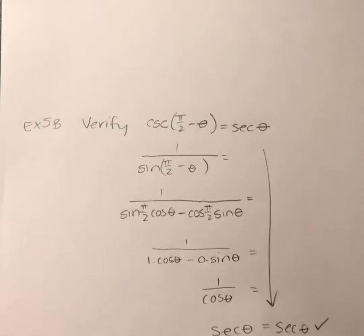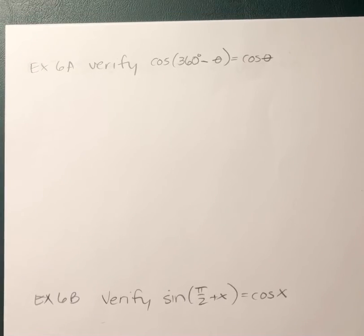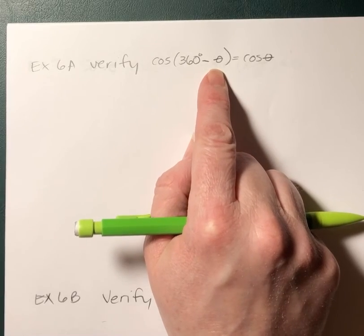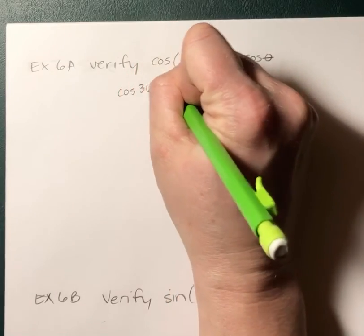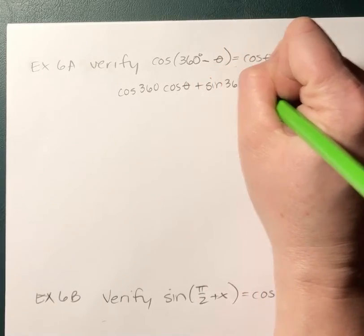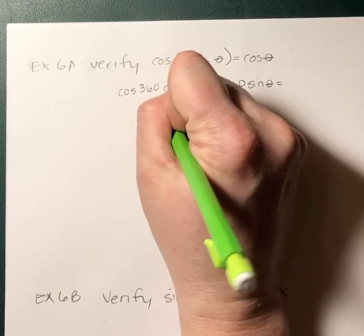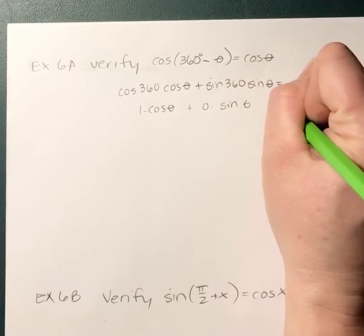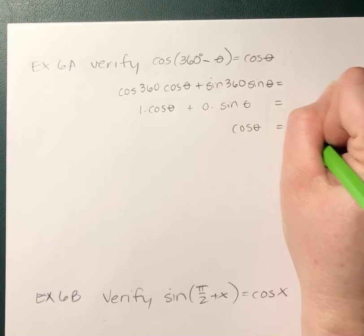All right. Two more. These are, again, examples 6a and 6b, and they're still verifying identities. This is the cosine of a difference. Now they're throwing at us in degrees. So, I do cosine, cosine, sine, sine. Cosine of 360 is 1. Sine of 360 is 0. This is gone. I'm left with the cosine of theta equals the cosine of theta.